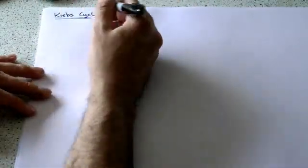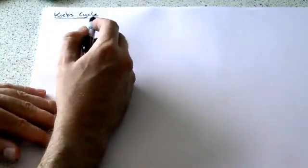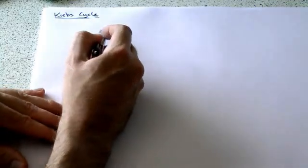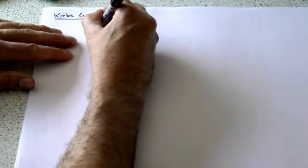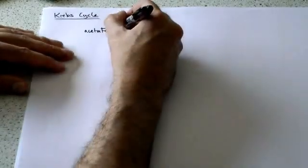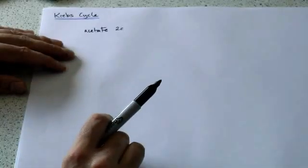We've come off the link reaction, so we had pyruvate going through acetyl coenzyme A to acetate and then it enters the cycle. Let's just put the acetate on here for a moment. Acetate is a two carbon compound, it's all about remembering the carbons here.